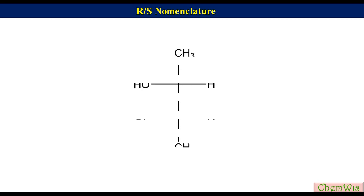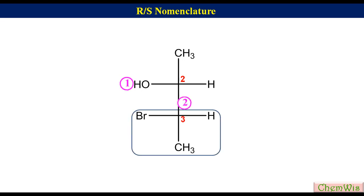Suppose we have 3-Bromo-2-Propanol represented by Fisher projection formula. There are two chiral centers, C2 and C3, and we will determine the configuration of the two centers one by one. For the determination of absolute configuration at C2, first label the groups based on their priorities: hydroxyl group is 1, bromoethyl is 2, methyl is 3, and hydrogen is 4. Draw an arrow from 1 to 3 via 2. Since the fourth priority group is on the horizontal line and the direction of arrow is counterclockwise, the configuration at C2 will be R.